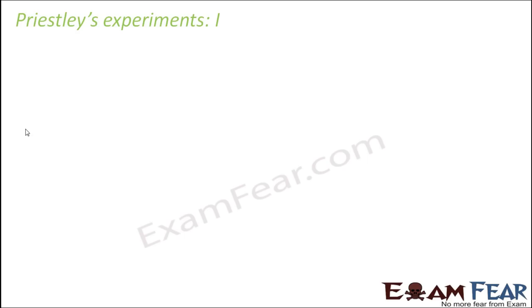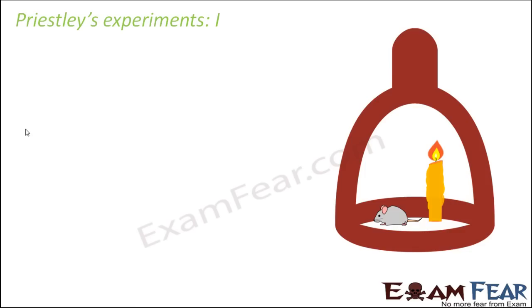Let us look at one of the earliest experiments of Priestley. In his first experiment, he took a bell jar and placed a lit candle and a mouse inside it. A bell jar is closed and shaped like a bell, isolated from the outside environment with no exchange of gases between the inside and the external environment.